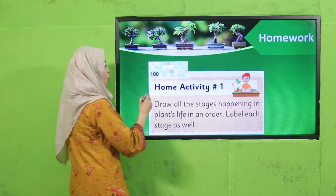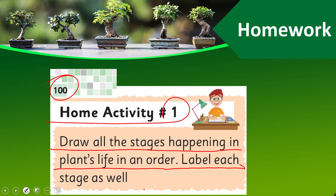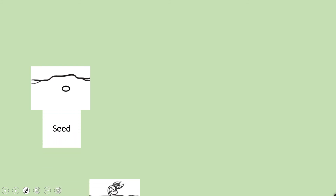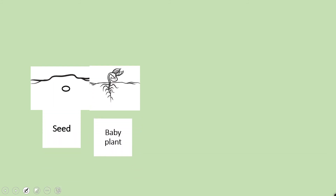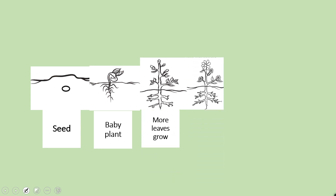Now it is time for your homework. From page 100, draw all the stages happening in a plant's life in order and label each stage. Draw: first a seed, then a baby plant — that is called germination; then more leaves grow — that is called growth and development; and then a mature plant with flowers — that is called reproduction. This is how you will draw the life cycle of a plant.